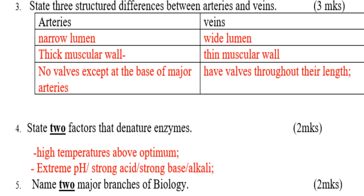Number four: state two factors that denature enzymes. Number one: high temperatures above optimum. Number two: extreme pH — that is, strong acid, strong base, or alkali.